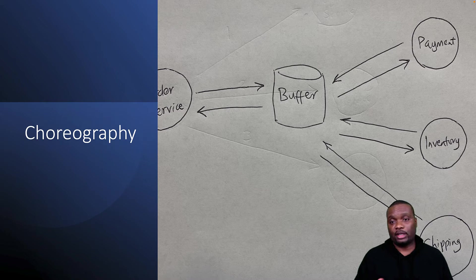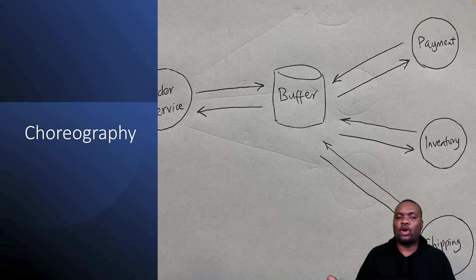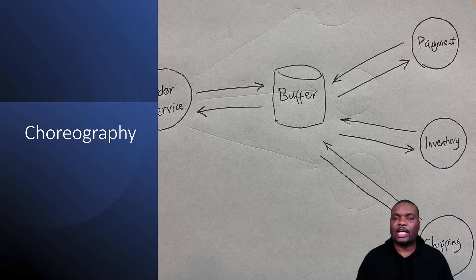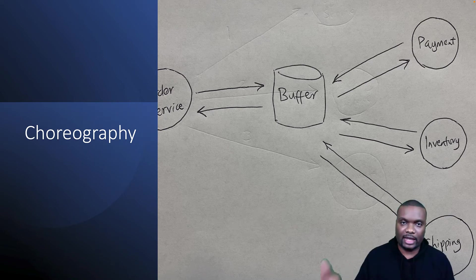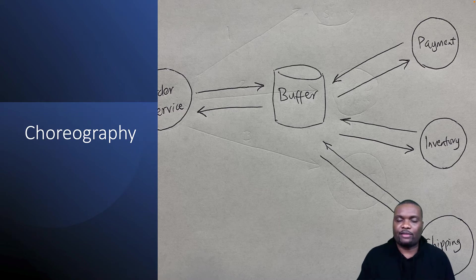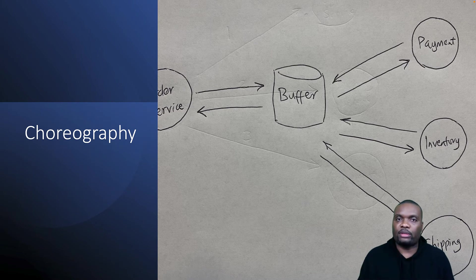In this particular choreography sequence, we have the same order service, but instead of the order service calling the payment service directly, the order service just drops the event or message inside some kind of buffering mechanism. The buffering mechanism stores the events temporarily, then all the downstream services come, pick up the event, process it at their own pace, put the response back, and that triggers the next one in the sequence. If they have any problem, they retry until successful.